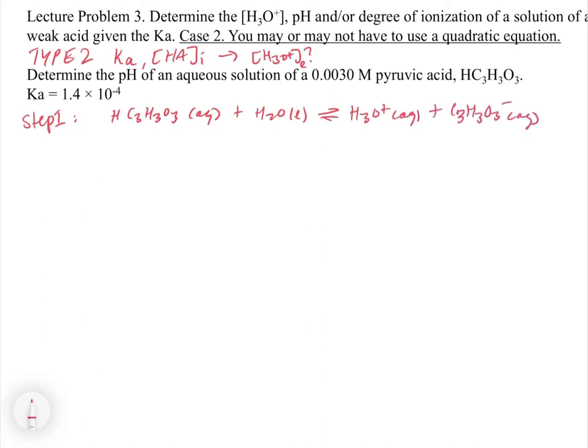And step two, of course, is to write my Ka, which is equal to the concentration of C3H3O3 minus times the concentration of H3O plus divided by the concentration of HC3H3O3. Okay, and so that's how we set up the basic parts. So now the third step is always to go right to your ice table.